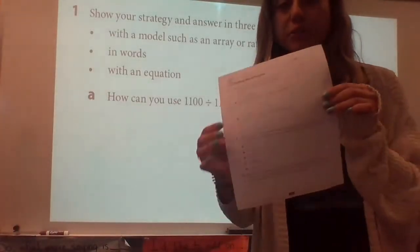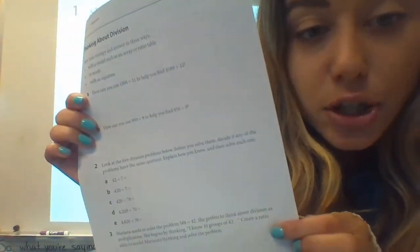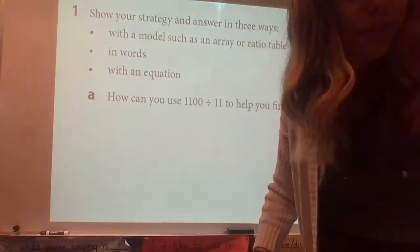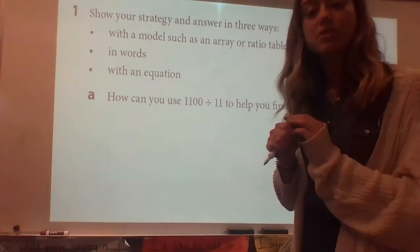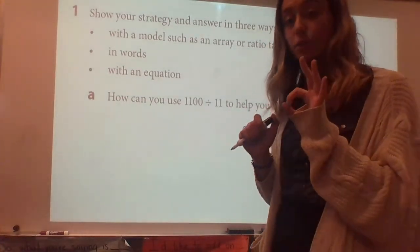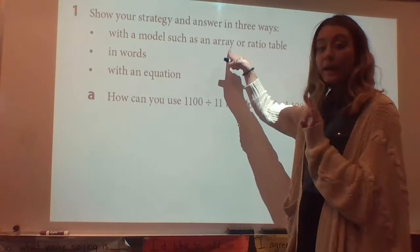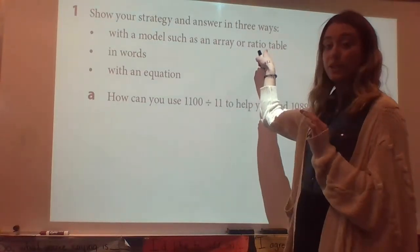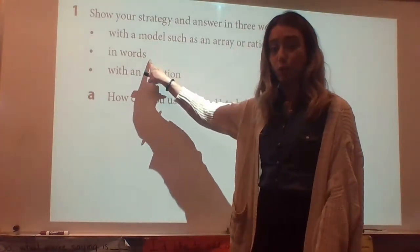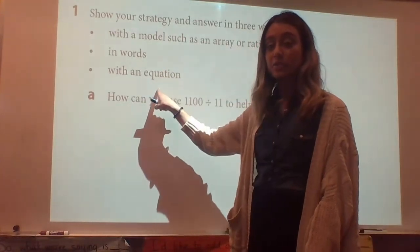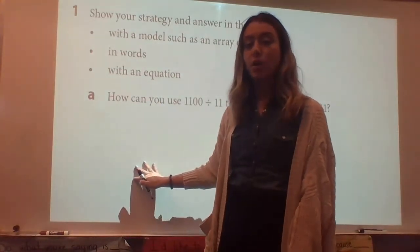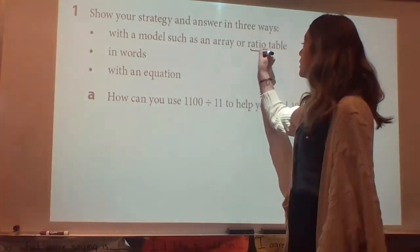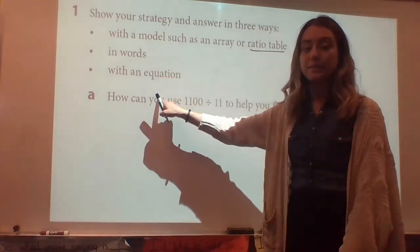We are going to do number 1 on Thinking About Division, page 262. I've blown it up big on our board here. It says: show your strategy and answer in 3 ways. Remember, you have to use a model — you can use an array. Today we're going to use ratio tables in this video. You also need to use words and an equation. So this is a good checklist to make sure that you did all three of these things. I'm going to use a ratio table, and I also have to use words and an equation.